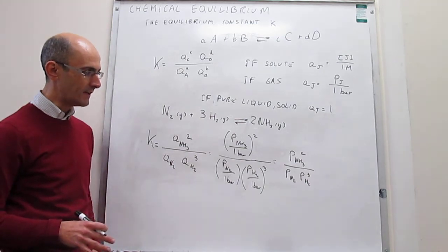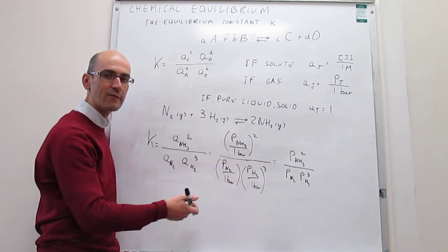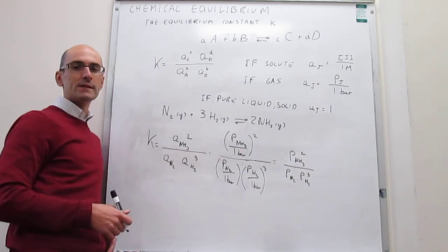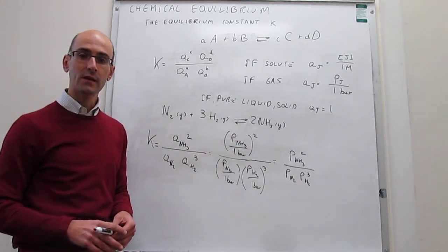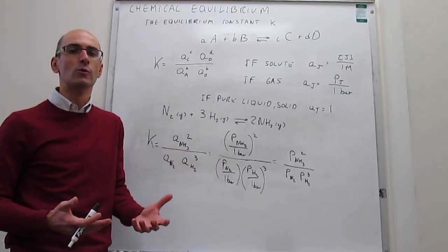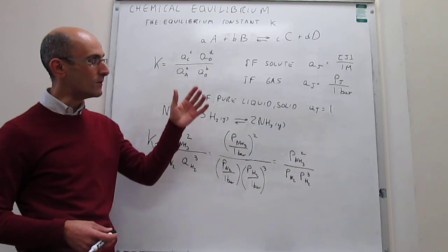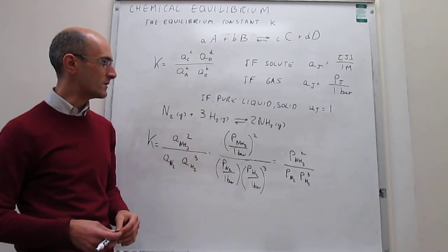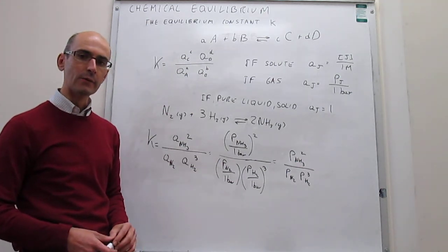Equilibrium constants do not have any dimensions at all, and that is because in the true form all pressures are divided by a reference state which cancels the units. In this video we have seen a deeper version of what the equilibrium constant is for a general chemical reaction. Generally, we define the equilibrium constant in terms of activities, which are placeholders for measures of concentration. We use a map to turn those activities into something useful: molar concentrations for solutes in solution, partial pressures for gases, and for pure liquids and solids the activities equal one.